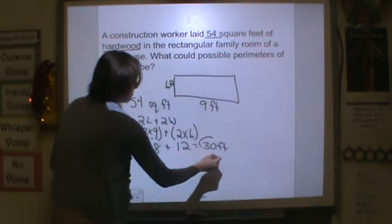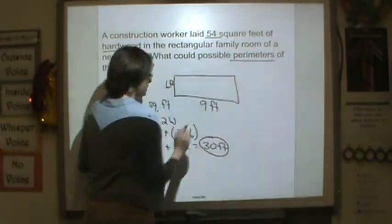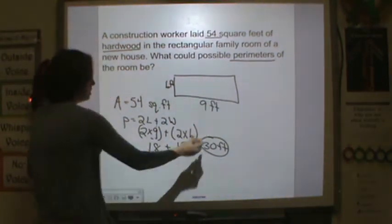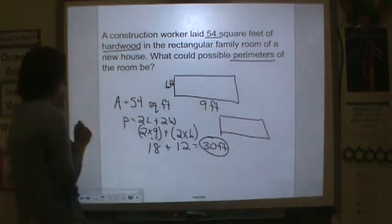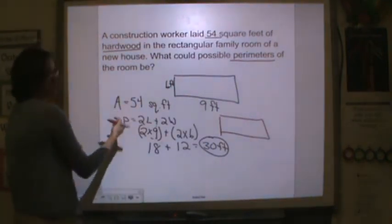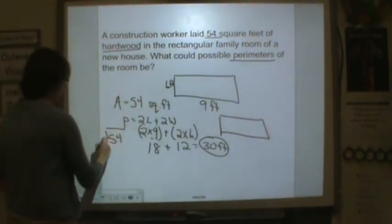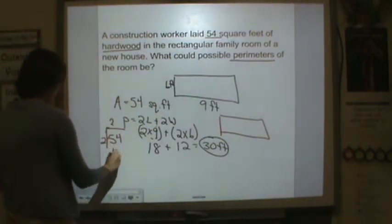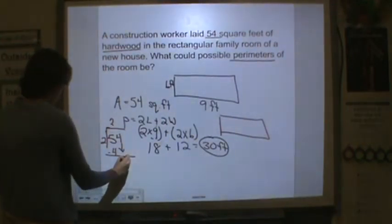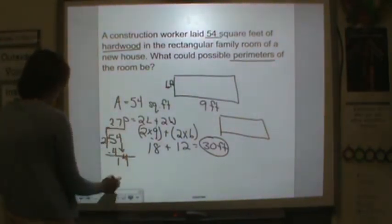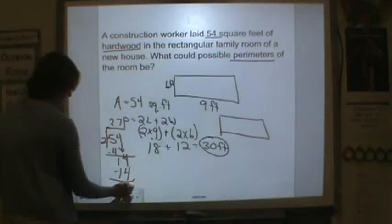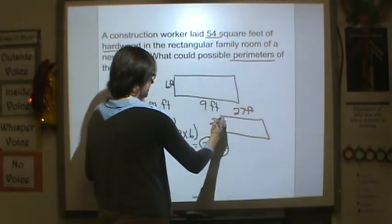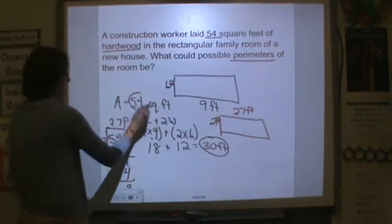So one possible perimeter is 30 feet, but it said possible perimeter, so it's plural. So let's find another way we could do this. Another rectangle that I could do would be two numbers that multiply to 54. 2 and something. I know 54 is even, so let me divide 54 by 2. How many 2's are in 5? 2. Multiply, subtract, bring down. How many 2's are in 14? 7. Subtract. So 27 by 2, because if I multiply those, I get an area of 54.